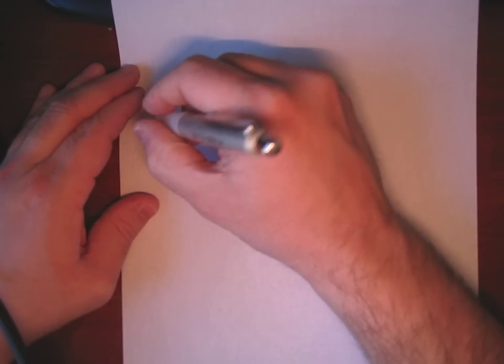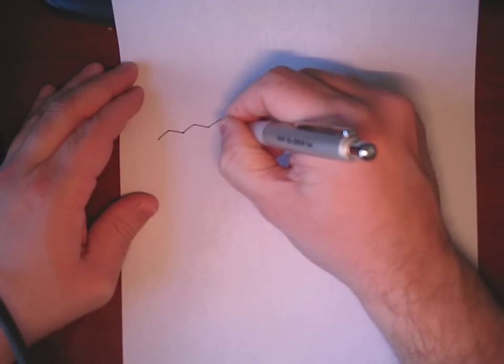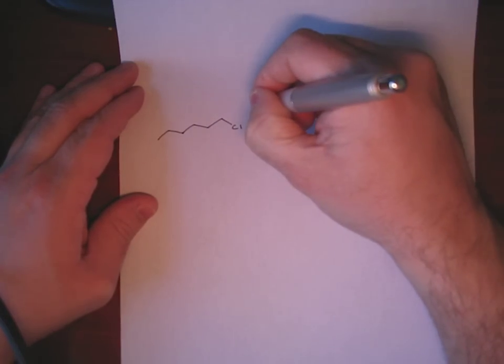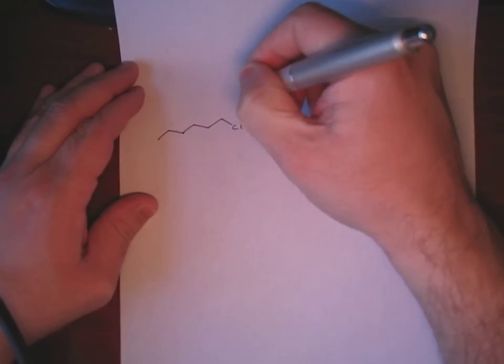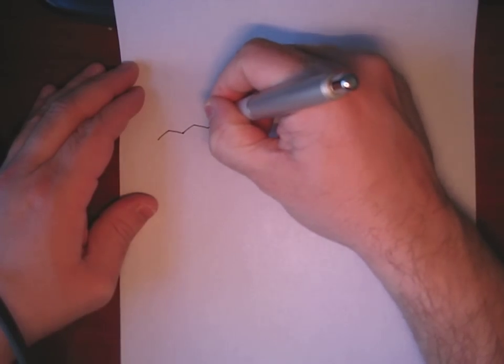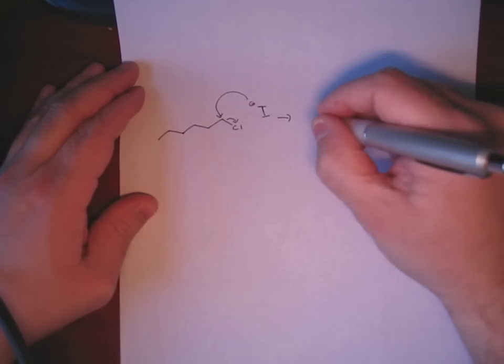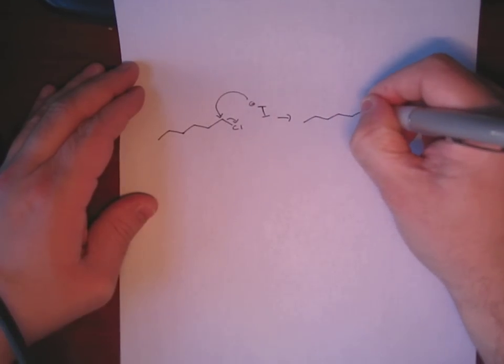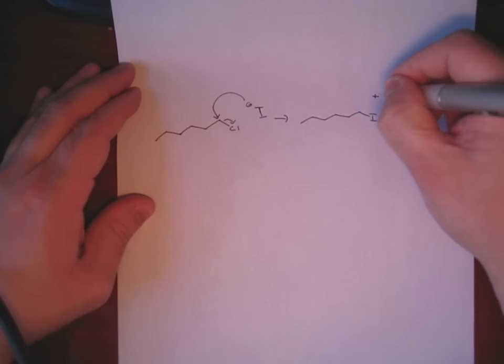And so the only trick to this is recognizing that the iodide plays a catalytic role by first forming the alkyl iodide in situ. And that goes on to react with acetate.